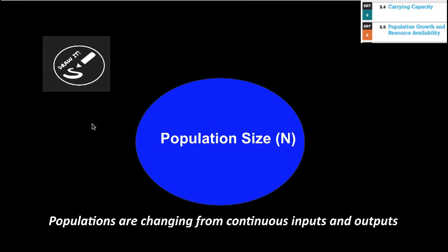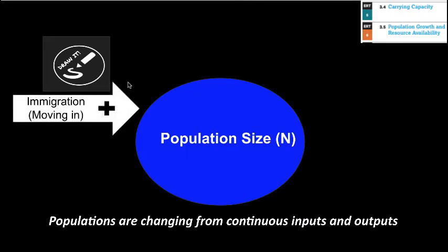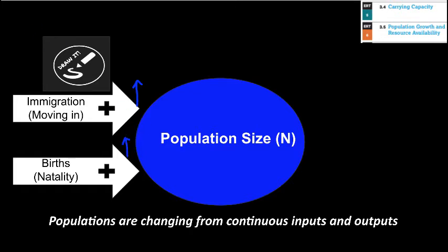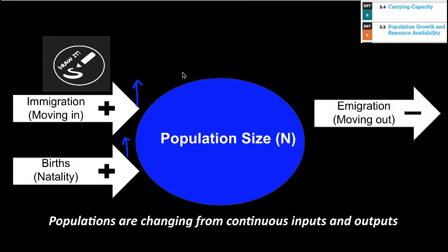Populations are dynamic — they're changing, always continuous from inputs and outputs. How a population changes, represented by the blue circle here, is our population size. It's going to increase from two main factors: immigration, which is organisms moving into a population, and births, also referred to as natality, which are also increase factors in our population size. These things result in an increase in population because they're bringing new organisms in from outside, or there are new births in the population as well.